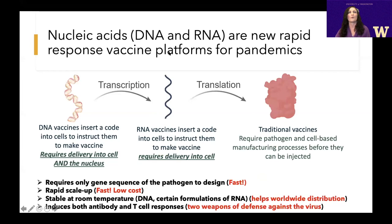Nucleic acid vaccines have been around for quite some time. I've been working on them for nearly 30 years. When we first started, we immediately recognized their potential for rapid response to pandemics — because they require only the gene sequence. You don't need to get the pathogen, purify it, or create recombinant proteins. Once that sequence is identified, you can make a DNA or RNA vaccine. These have real significant advantages: rapid scale-up for DNA vaccines, stability at room temperature, and the capability of inducing both antibody and T cell responses.